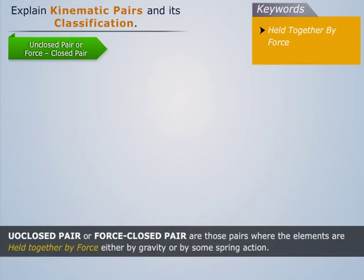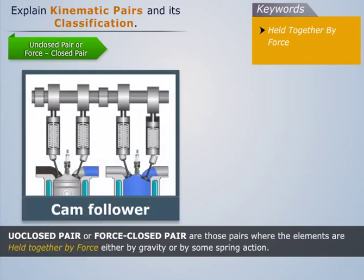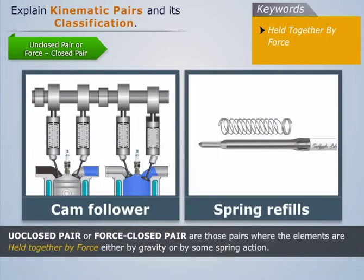Unclosed or force-closed pairs are those pairs where the elements are held together by force, either by gravity or by some spring action. Cam-follower arrangements in automobiles and spring refills in pens are a few examples of unclosed or force-closed pairs.